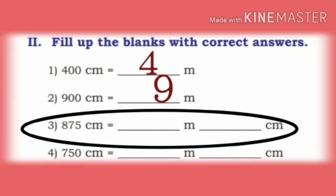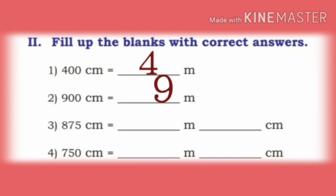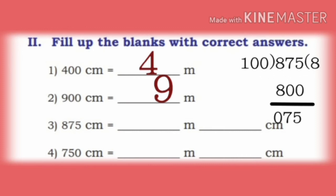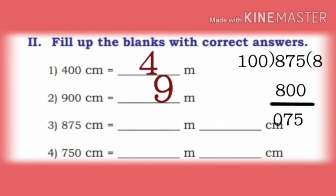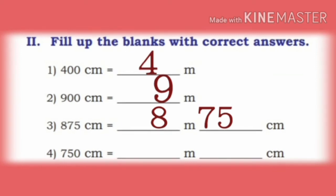Now, third one: 875 centimeter is equal to dash meter dash centimeter. We divide 875 by 100. 100 eights are 800, so quotient is 8 and remainder is 75. So, answer is 8 meter and 75 centimeter.